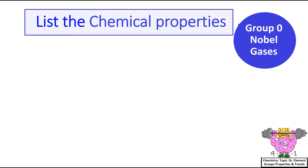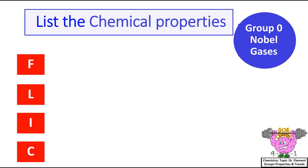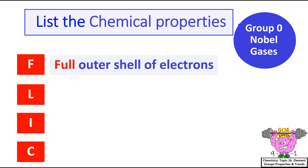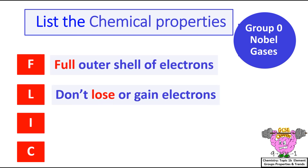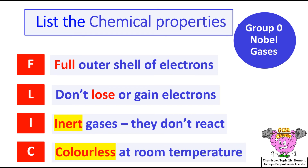List the chemical properties of Group 0 noble gases. The acronym I use for them is FLIC: noble gases have a full outer shell of electrons, so they don't lose or gain electrons. They're inert gases, which means they don't react with other groups, and they're colourless at room temperature.